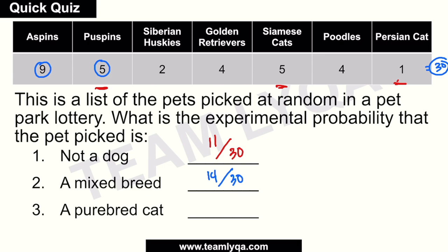Next, ang hinahanap ay yung mga purebred cats. So hanapin natin sila — you have yung Siamese cat natin, five, at yung Persian cat na one. So five plus one is six over thirty. Now again, your teachers will probably ask you to ilagay sa lowest terms itong mga to. Fourteen over thirty, that would be seven over fifteen. Six over thirty, that is one out of five. Kung kailangan rin yung i-convert sa percentage or sa decimal, pwede nyo rin syang gawin — yung lesson naman dyan ay nandun din sa description box natin sa baba.